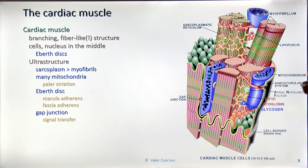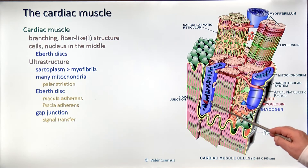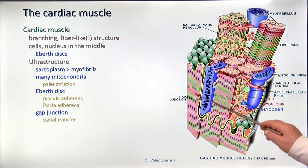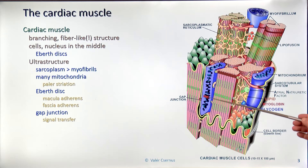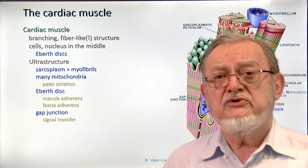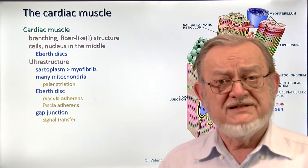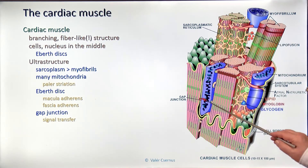We have a lot of gap junctions — the largest number of gap junctions in our body is in the cardiac muscle. These are little tunnels which bridge over the intercellular substance and let neighboring cells communicate with each other. The lumen is very tiny — only ions can pass through — but that's enough for sending a message from one cell to others. This is very important because the cardiac muscle cells are not innervated; they are not controlled by nerve cells or rhythmically pulsing bioactive materials.